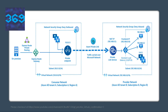Now let's look at the pictorial overview of how it actually works. You have two networks: one is your consumer network and the other is your provider network. The important components required are: the private endpoint, which is part of your consumer network, and the private link service, which is part of your provider service. Based on the configuration, the traffic flows from the private endpoint to the private link service using the Microsoft backbone network.